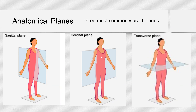On this slide, you can see those planes shown separately, which I think gives a little better understanding. Here's our sagittal — specifically mid-sagittal — coronal or frontal, and transverse.